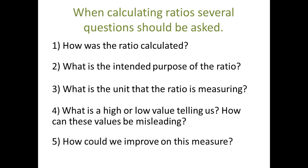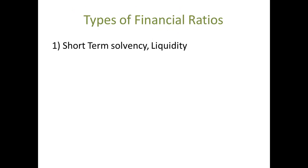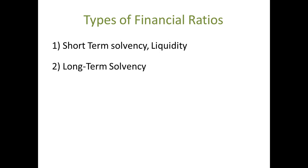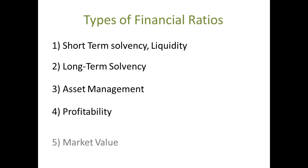Financial ratios are usually grouped into the following categories: short-term solvency or liquidity; long-term solvency or financial leverage; asset management or turnover; and profitability and market value.